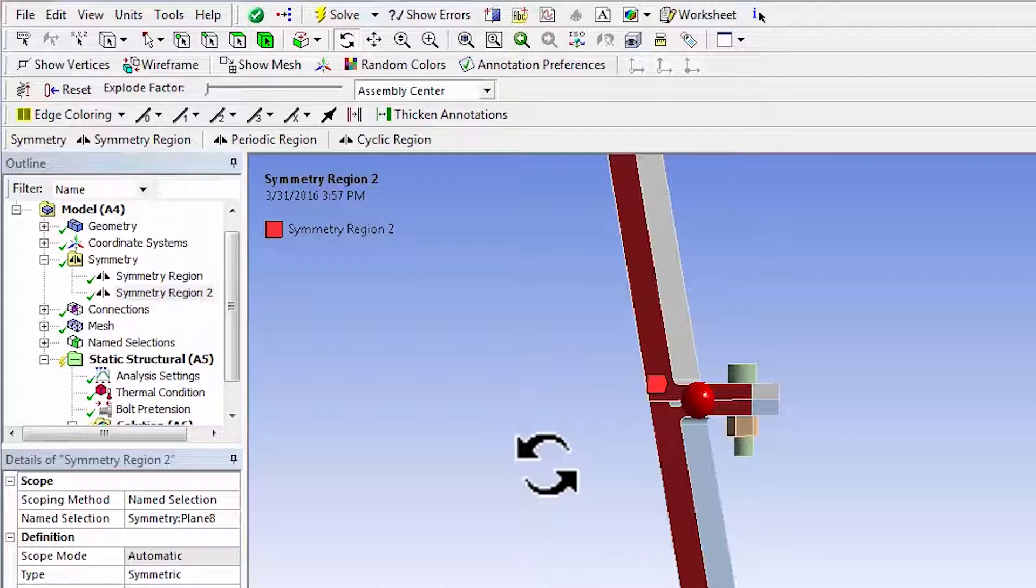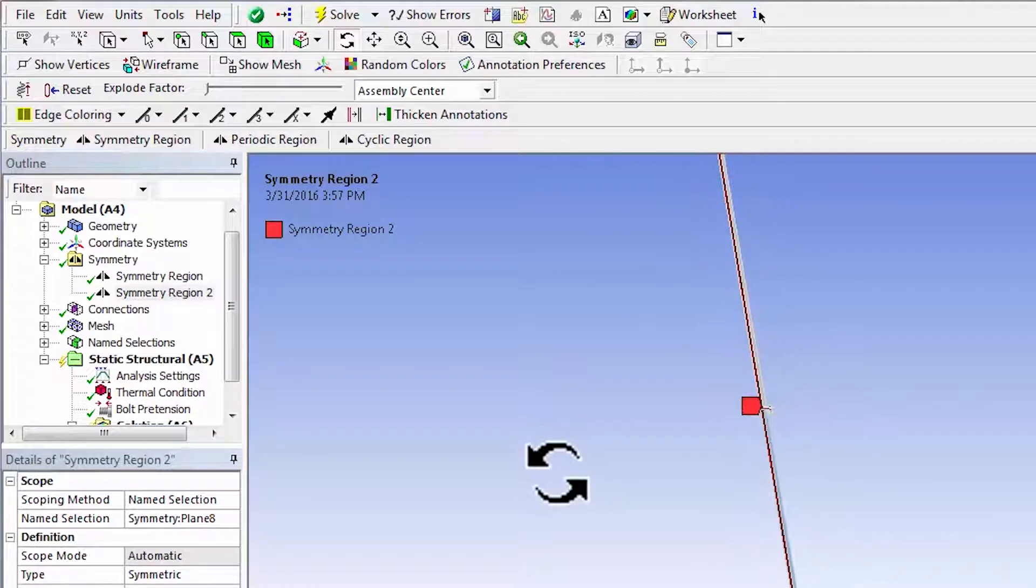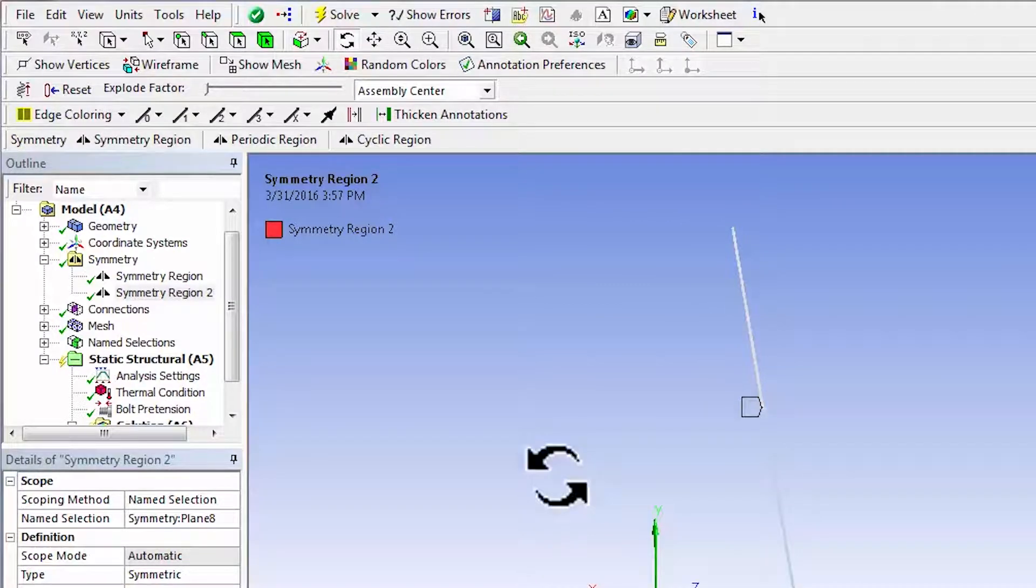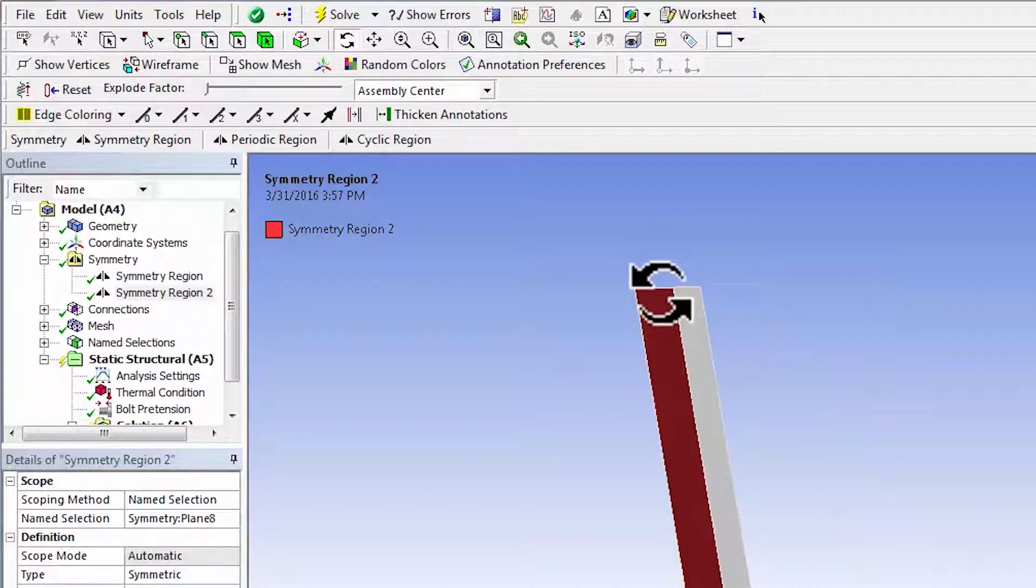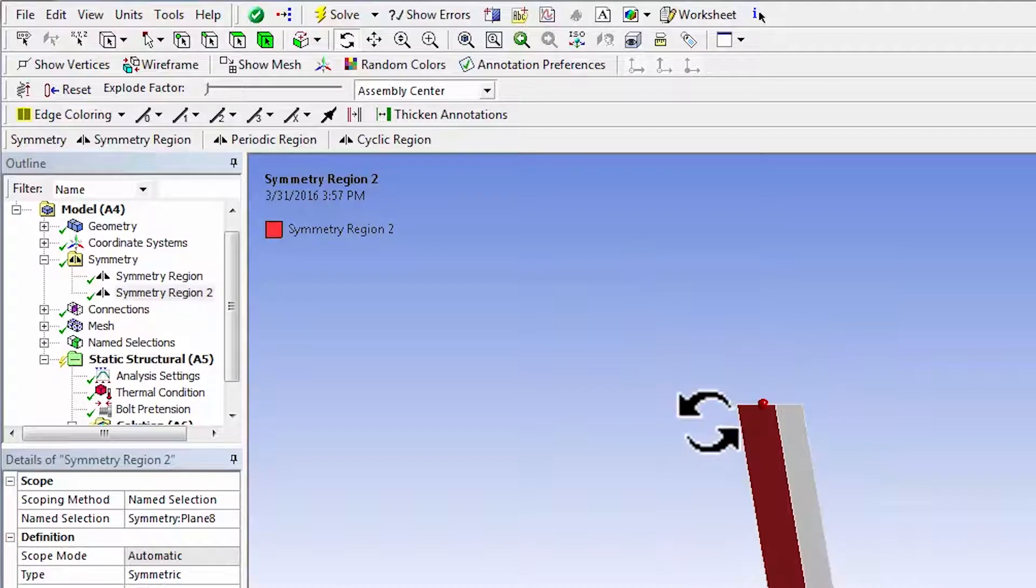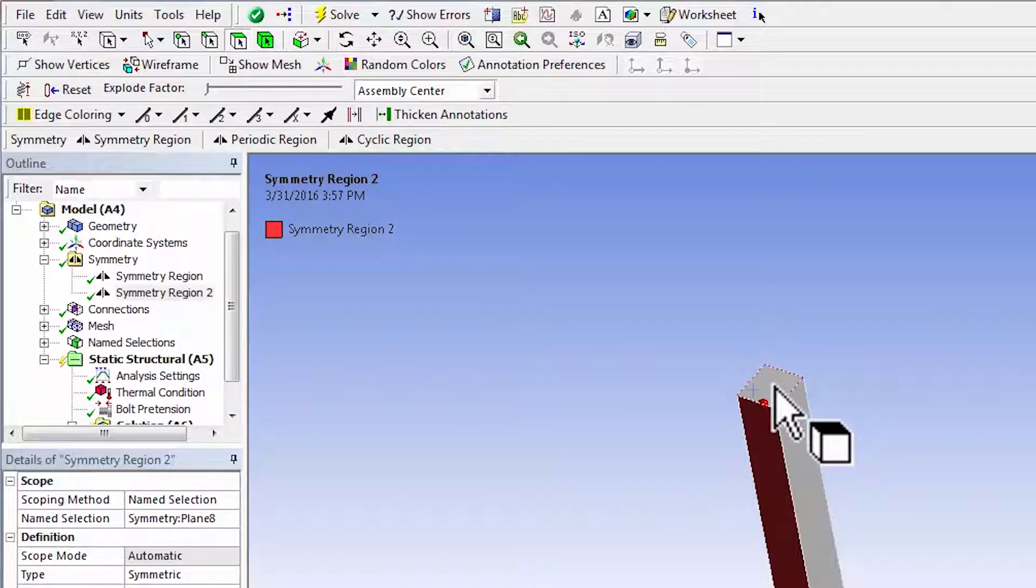And then the only remaining essential boundary condition is the frictionless support at the top that's modeling the connection to the top part of the nozzle, which we're not modeling. So if I zoom in here, and again, let me say rotate about there so that I can see that face. And I'll select the face selection filter, select that face.